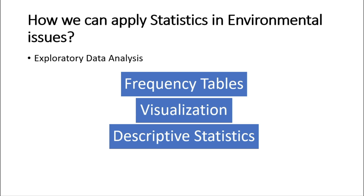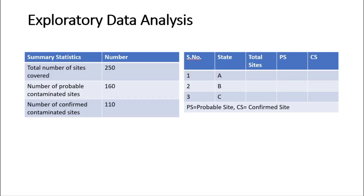Let's understand some of the techniques with examples. For exploratory data analysis, it consists of frequency tables, data visualization, and descriptive statistics. For instance, suppose we want to make a table reporting the total number of sites covered, number of probable contaminated sites, and number of confirmed contaminated sites — that is data tabulation. Another example is listing those totals according to state.